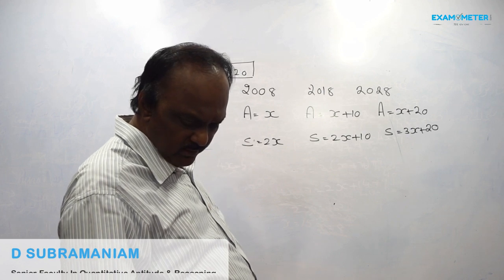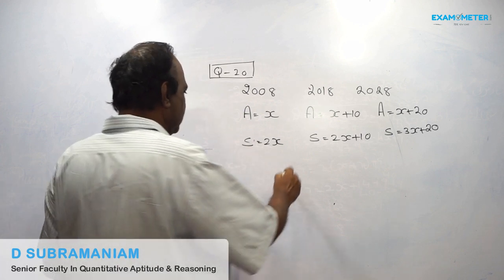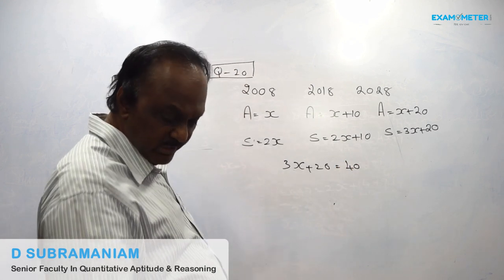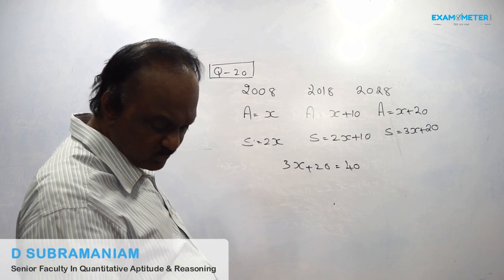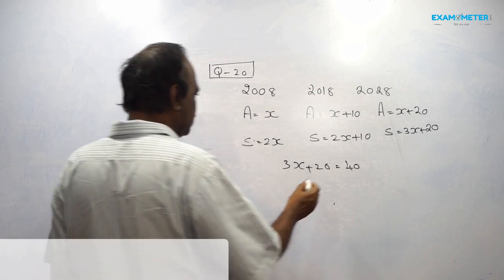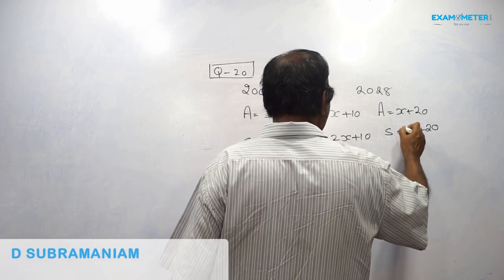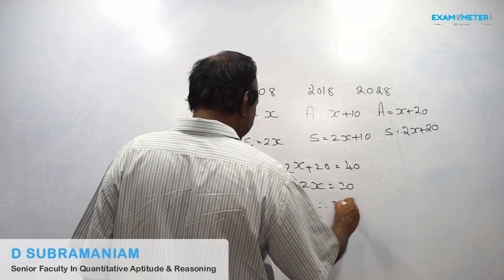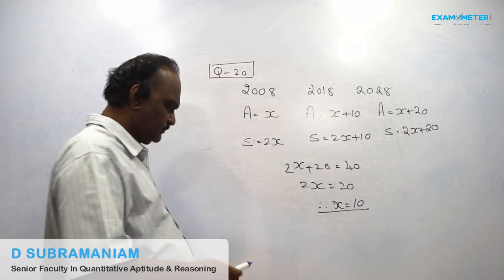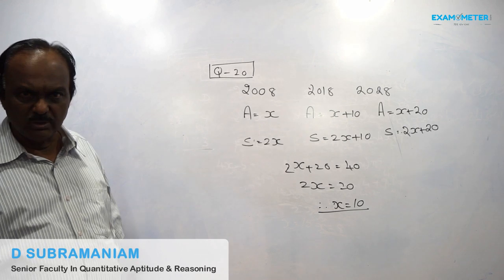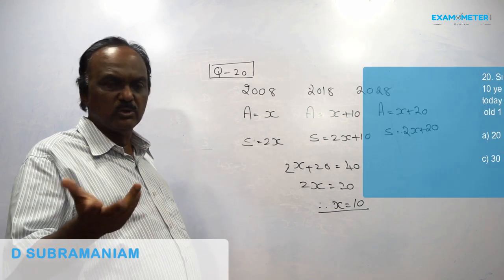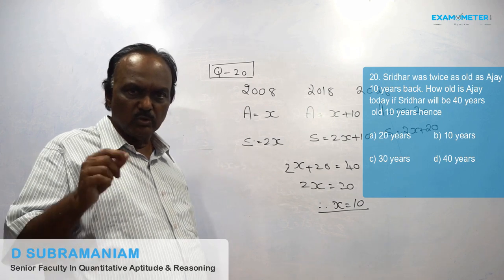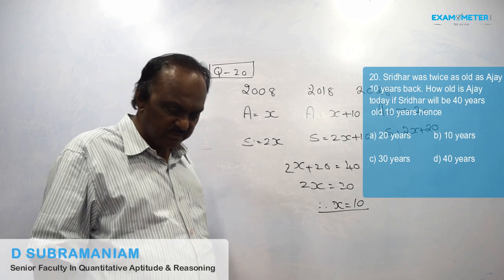How old is Ajay today if Sridhar will be 40 years old after 10 years? So 2x plus 20 is equal to 40. Therefore, 2x is equal to 20, so x value comes to 10. How old is Ajay today — today means 2018. Ajay is x plus 10. x value is 10. 10 plus 10 is 20. So today Ajay is 20 years old. So answer is 20, that is multiple choice A.